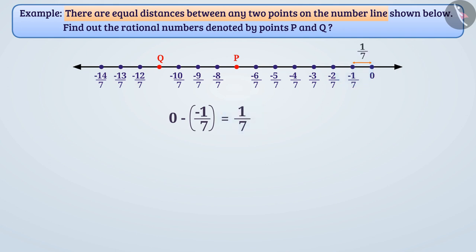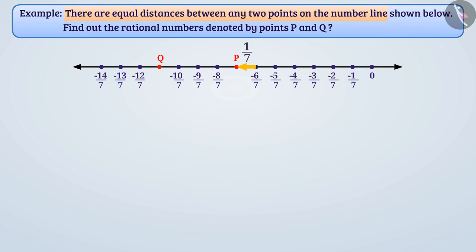This tells us that if we move to the left of 0 on the number line, the numbers are decreasing by 1 by 7. Here, we are getting point P by moving 1 by 7 distance to the left of minus 6 by 7. So, this will represent the point minus 6 by 7 minus 1 by 7, which equals minus 7 by 7. That is, the number will represent minus 1.